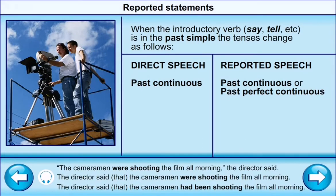When the introductory verb (say, tell, etc.) is in the past simple, the tenses change as follows: Direct speech — past continuous; reported speech — past continuous or past perfect continuous. For example: 'The cameraman was shooting the film all morning.'